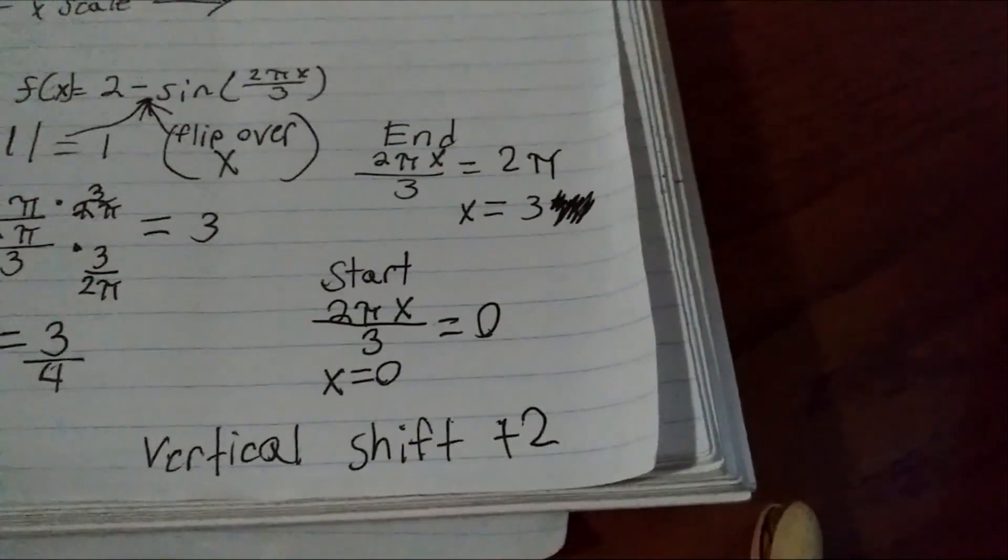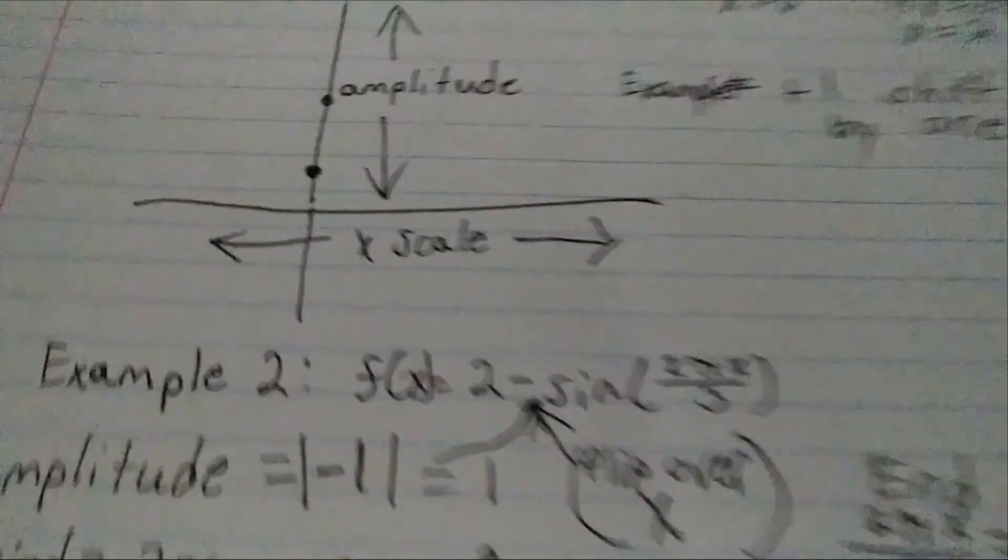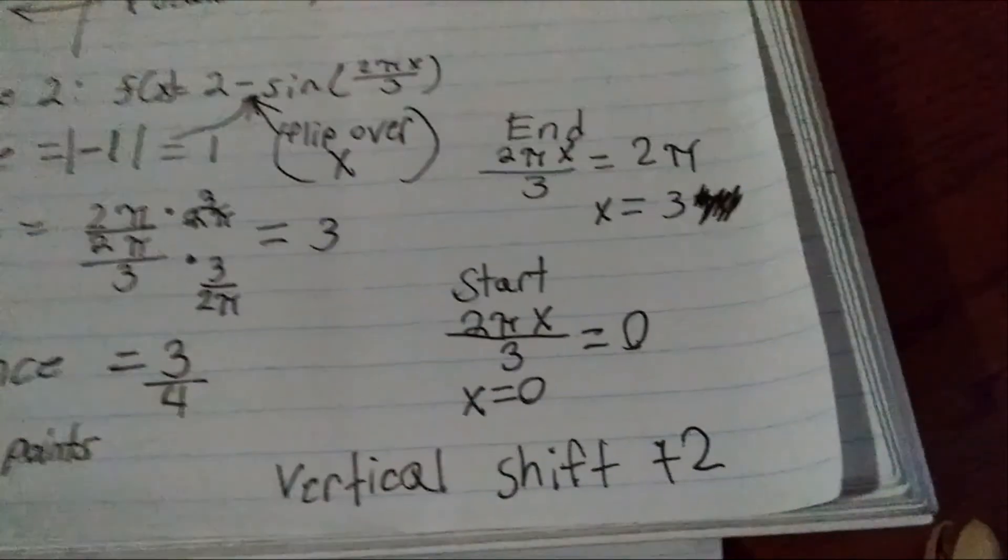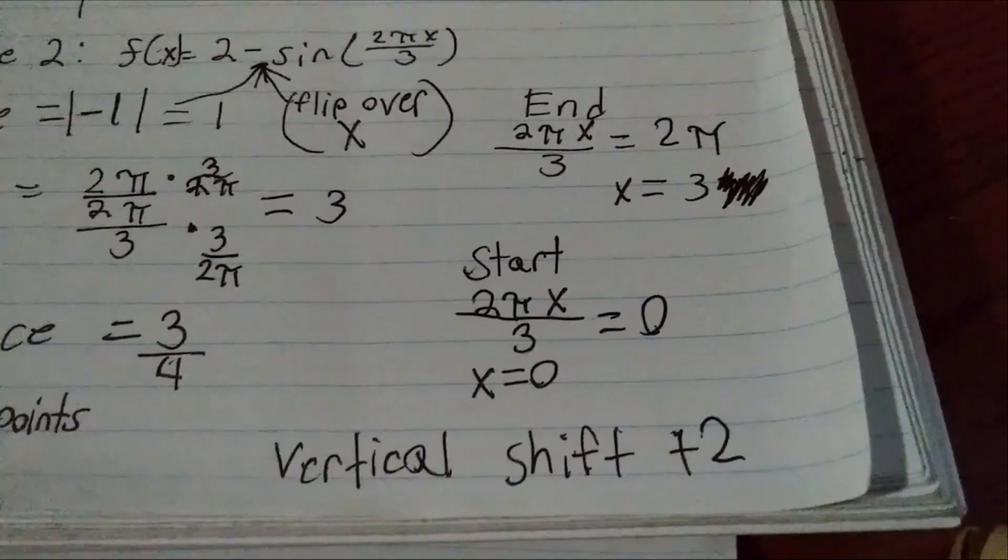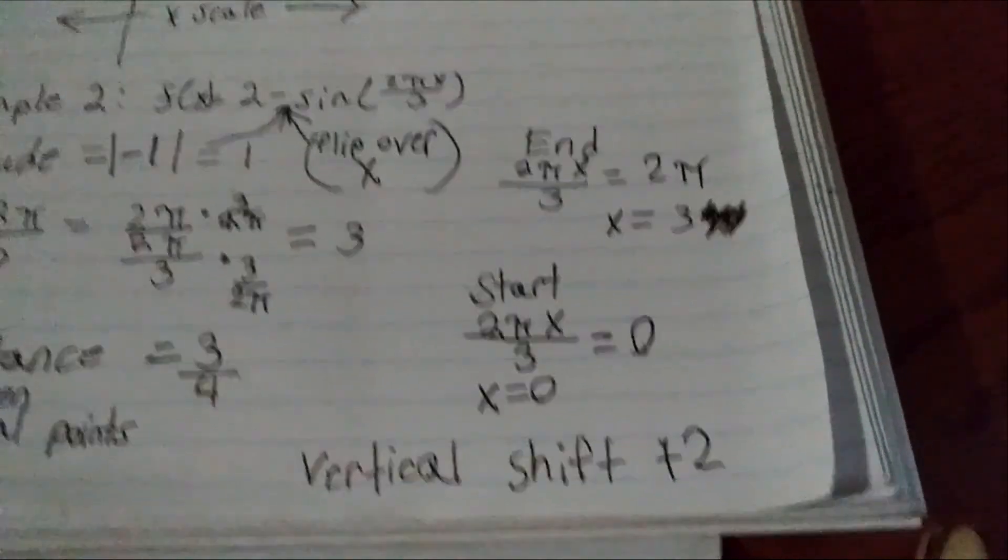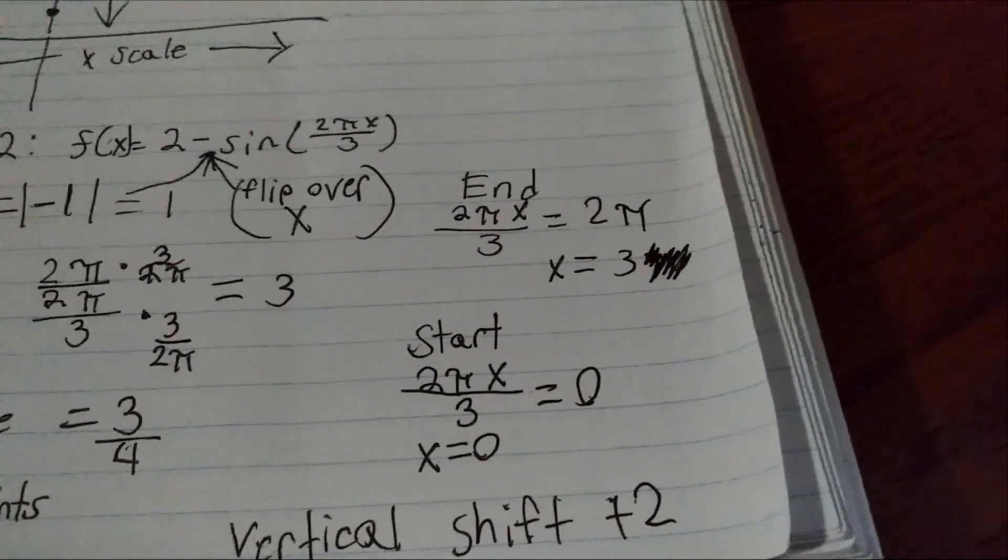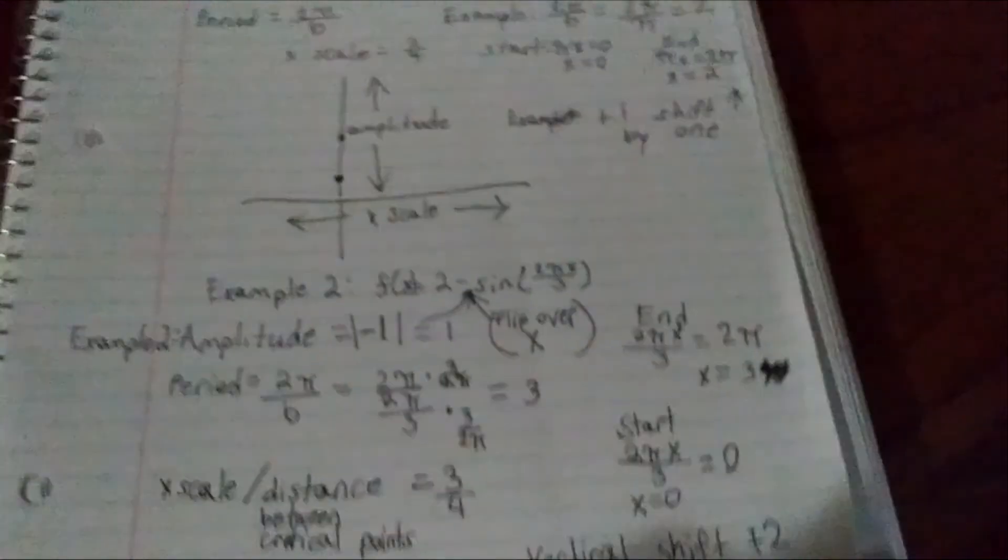Our vertical shift is going to be 2, because we have a plus 2 at the front of the function. Tricked you there, because we put it at front instead of behind. The start point would be 2 pi x over 3 equals 0, so x equals 0. And the end point would be 2 pi x over 3 equals 2 pi, x equals 3. Thank you.